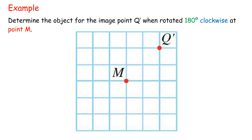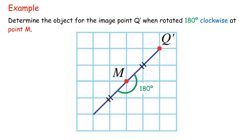Example: Determine the object for image point Q', when rotated 180 degrees clockwise at point M. Step 1: Draw a line joining M and Q', and extend it an equal distance to MQ' in the opposite direction. Step 2: Mark point Q on the extended line, where MQ = MQ'.